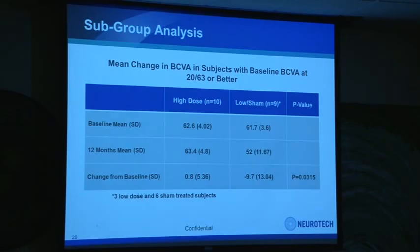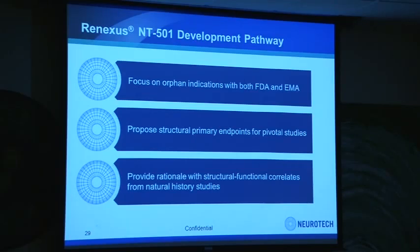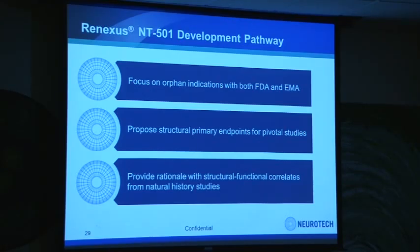The reason we did not see this type of benefit in RP is that in RP, both the treated group and the sham group did not lose vision — it's more chronic. GA is a faster deteriorating disease, which is why we're able to show the effect. GA is not an orphan disease and would require 100 to 200 million dollars and thousands of patients for a phase 3 study. As a small biotech company, we're strategically focused on orphan indications with both FDA and EMA. We are actively pursuing a path forward for phase 3 using cone photoreceptor preservation as an endpoint with a secondary functional benefit endpoint.